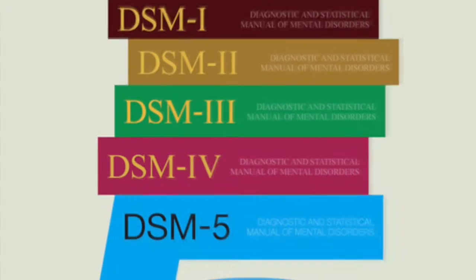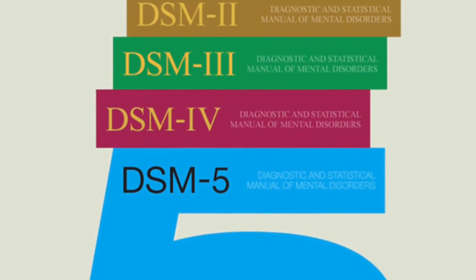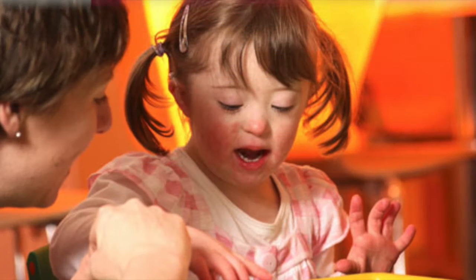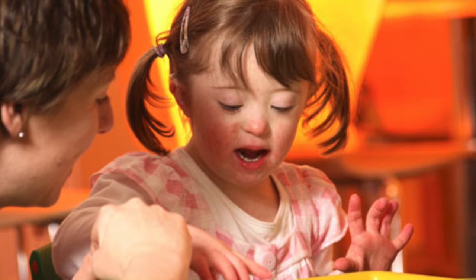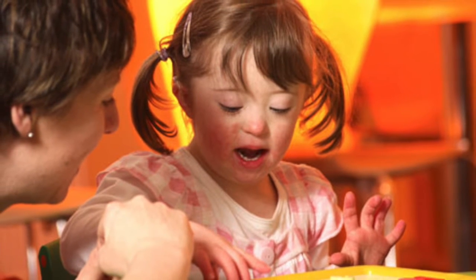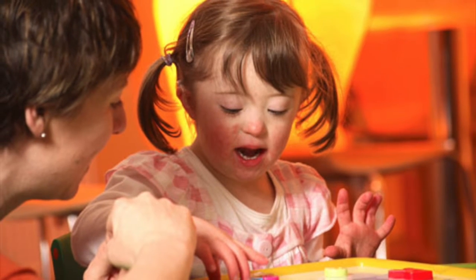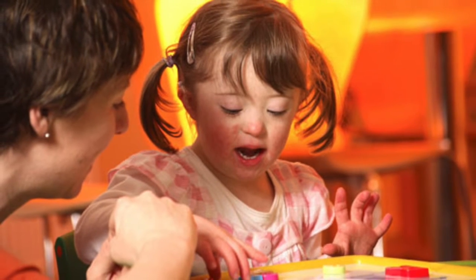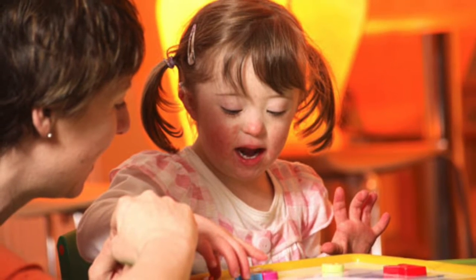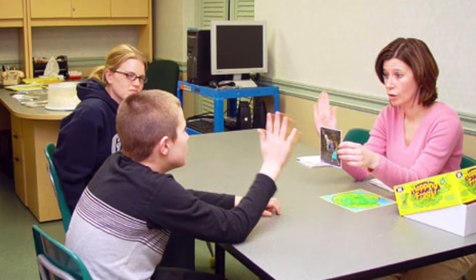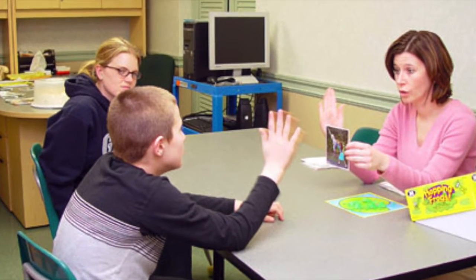As an affected child gets older, it is common to see mental impairment. DSM-5 criteria for intellectual disability commonly associated with Down syndrome include deficits in intellectual functioning, which includes reasoning, planning, problem solving, abstract thinking, judgment, academic and experiential learning, and impairments in adaptive functioning, which includes limited ability in communication, social skills, and personal independence.